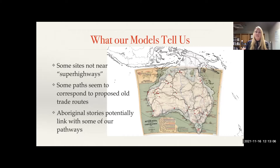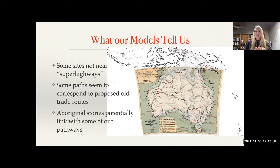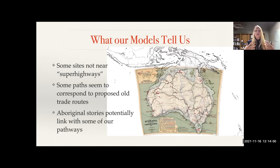Some sites don't correspond near these pathways — this tells us either our model is wrong, or there's limited archaeological survey in some areas. The model has pointed to areas where archaeologists could potentially go to look for ancient sites, and people are actually doing surveys there now. Also, mapping superhighways over an 1800s exploration atlas shows that trade routes — trading in Greenstone or Peturi tobacco — seem to correspond to some of the superhighways we identify. These may relate to stories that help people move throughout regions, potentially linking to some of our pathways.